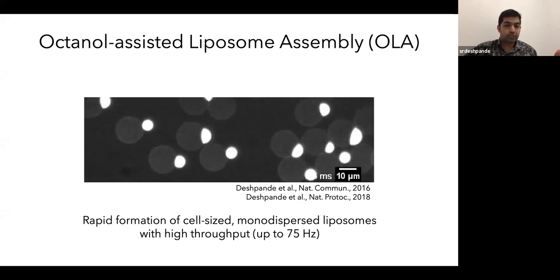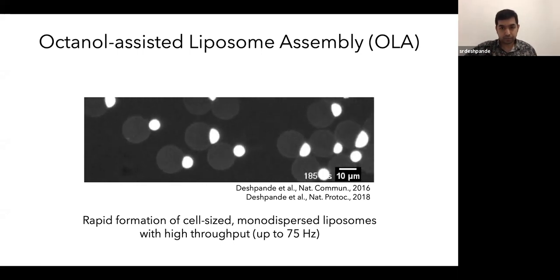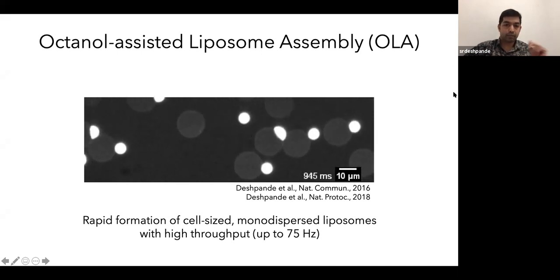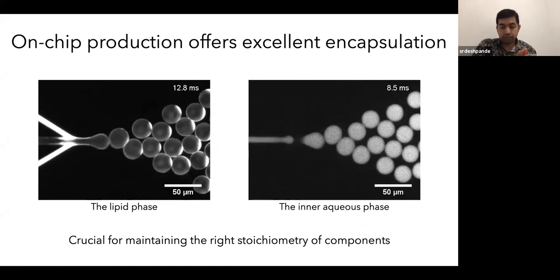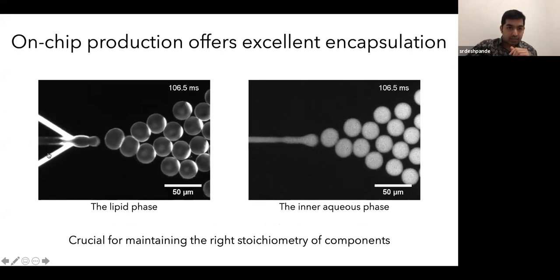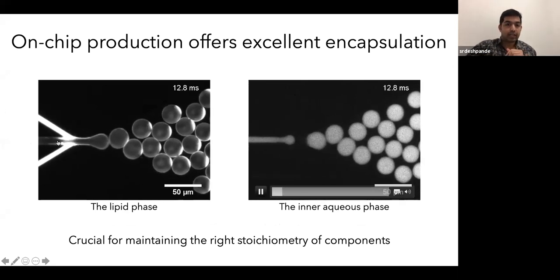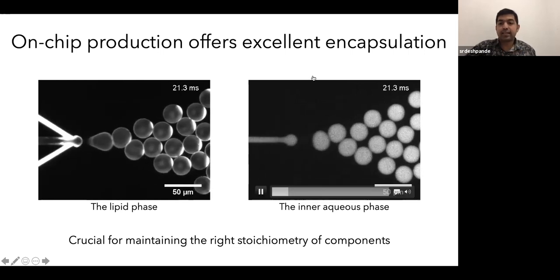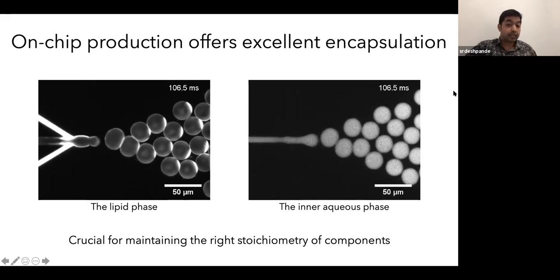And this can result in a rapid formation of cell-sized monodispersed liposomes with high throughput up to 7500 Hertz. Now I want to show you a few key characteristics of OLA. First thing is, since it's an on-chip production, it offers excellent encapsulation. Meaning, the inner aqueous phase is completely separated from the outer aqueous phase. And this is why the contents of the inner aqueous phase are totally isolated from the outer aqueous. And you can nicely encapsulate them inside. So what I'm showing you here is the lipid phase in slow motion and the corresponding inner aqueous phase, where you see all the inner contents getting encapsulated in these liposomes.